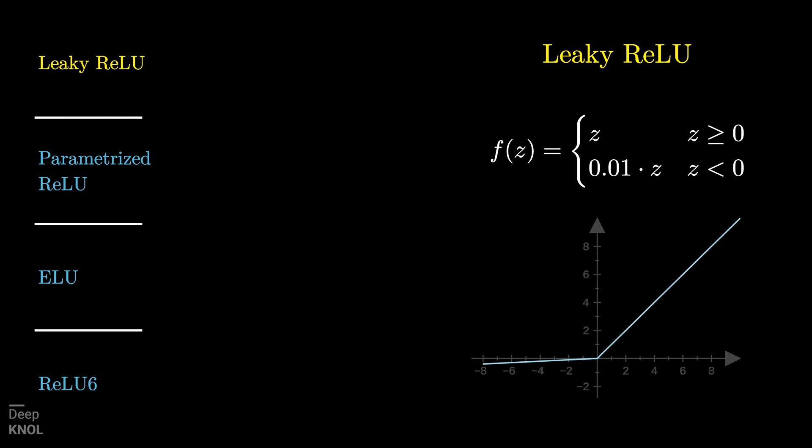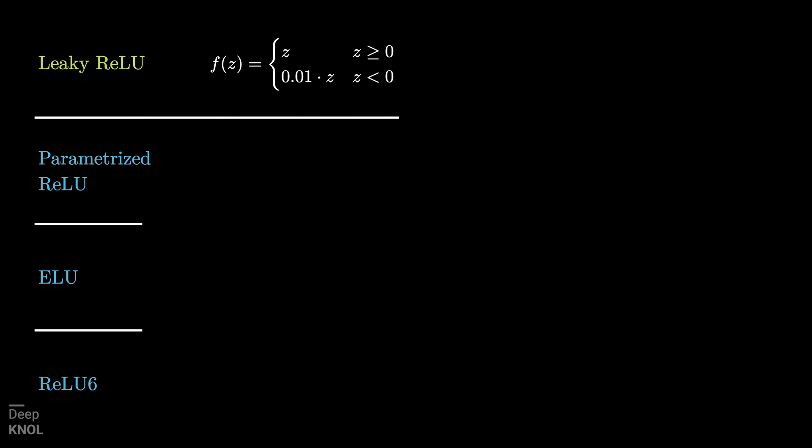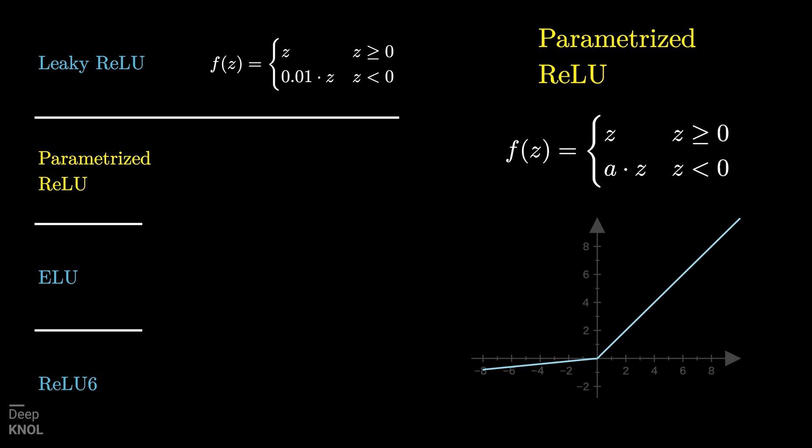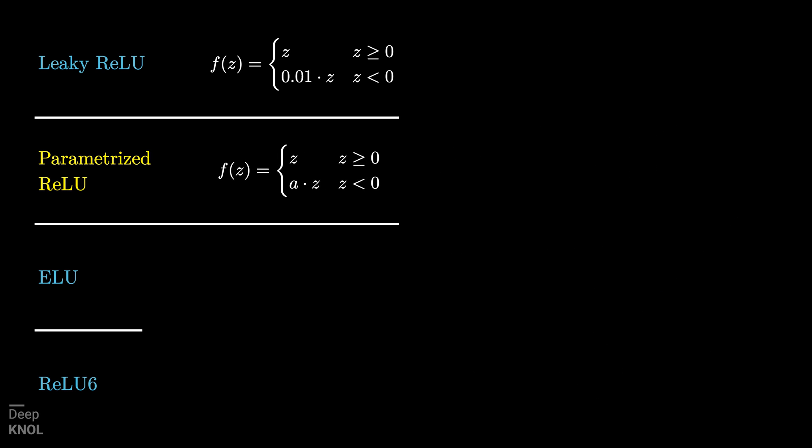Also, there are different variants of ReLU. Some of the more popular and distinct ones are listed here. Leaky ReLU has a small slope for negative values, instead of the value being all zeros, as in the case of vanilla ReLU. The negative slope is typically equal to 0.01. Next one is called Parametrized ReLU. It's a more generic form of Leaky ReLU, where the slope for negative Z is a trainable parameter defined by A.